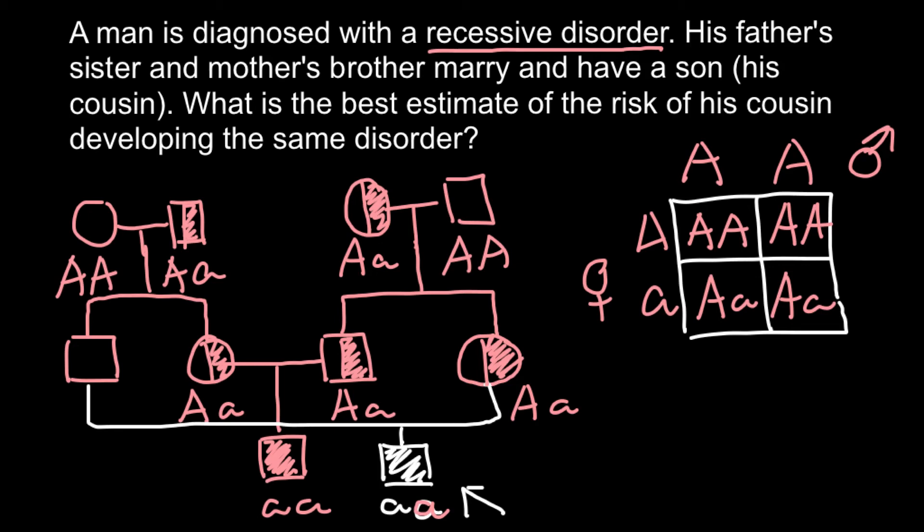So probability for this person to be a carrier would be one half, and the same probability for this person also to be a carrier. This probability also one half because one of the parents would be homozygous dominant and another parent would be heterozygous. Sex is not important here because this is not a sex-linked genetic disorder. This is an autosomal recessive genetic disorder.